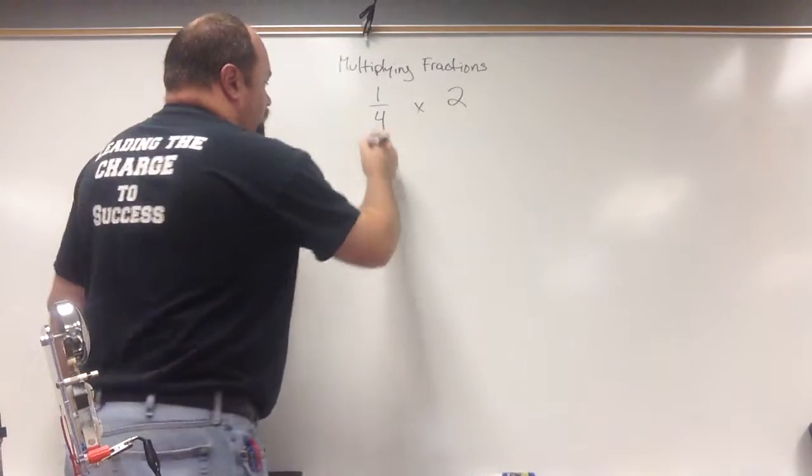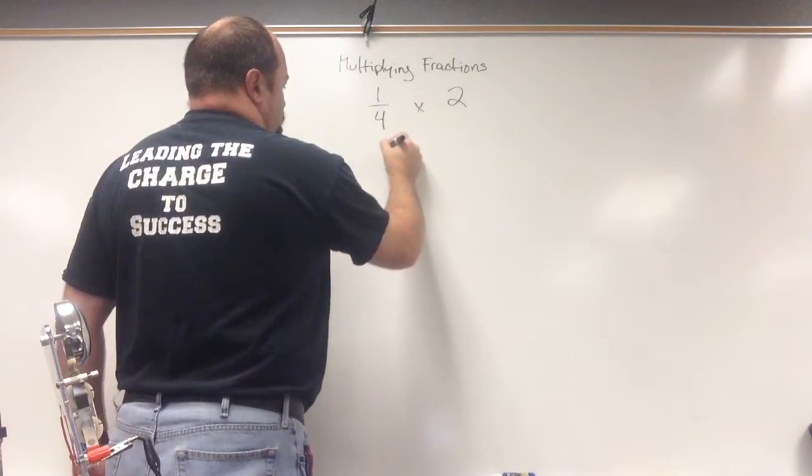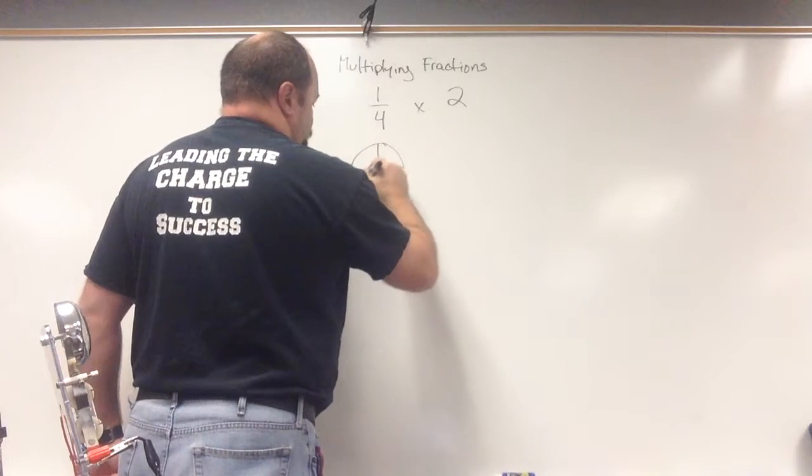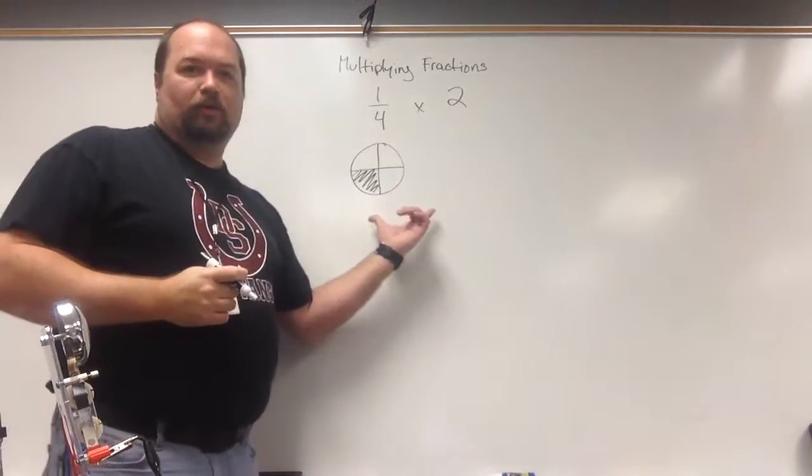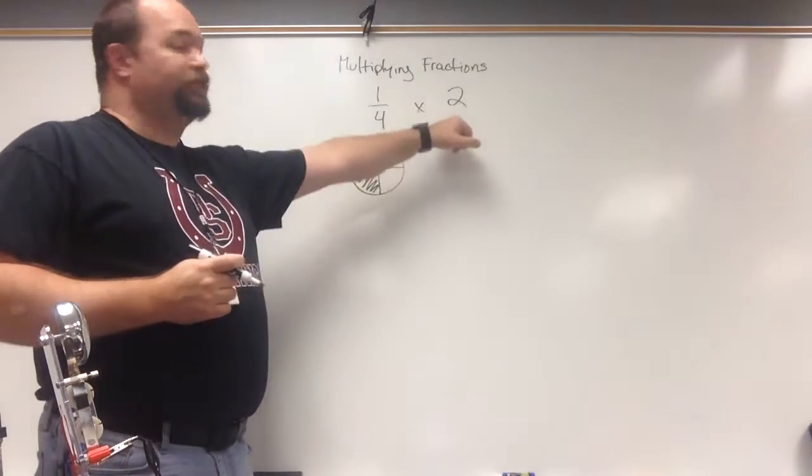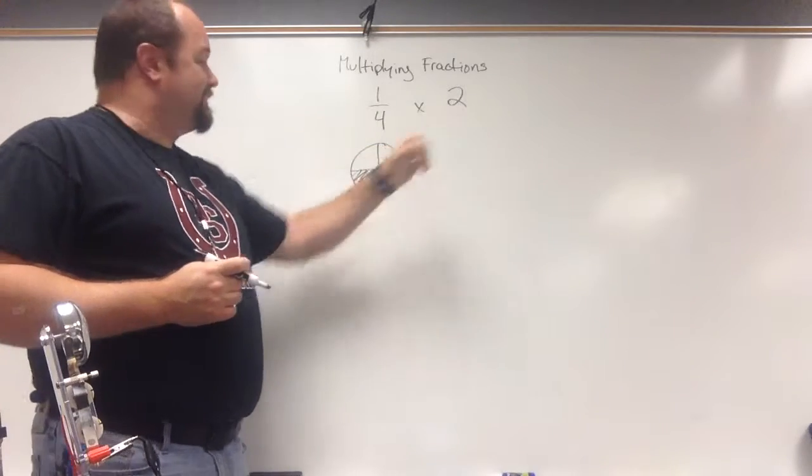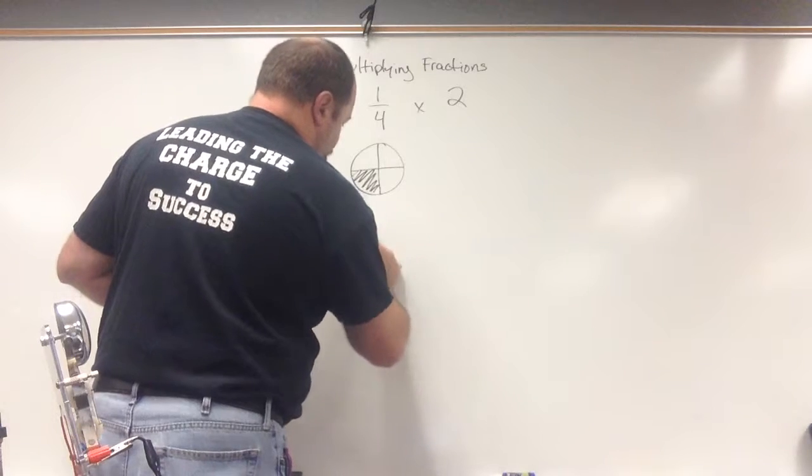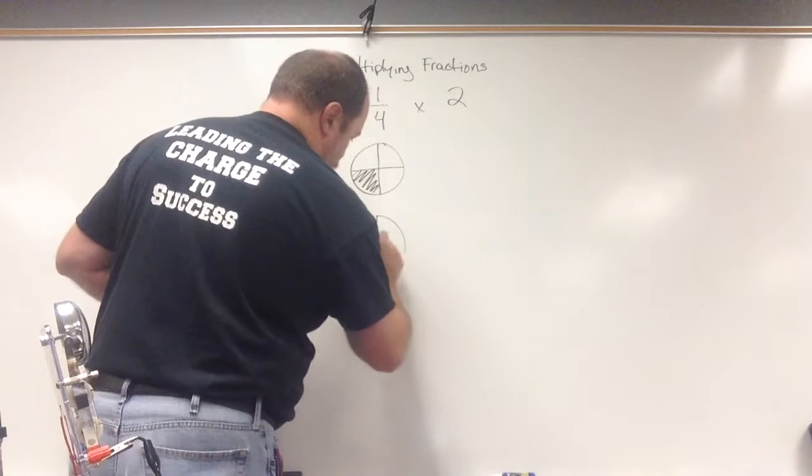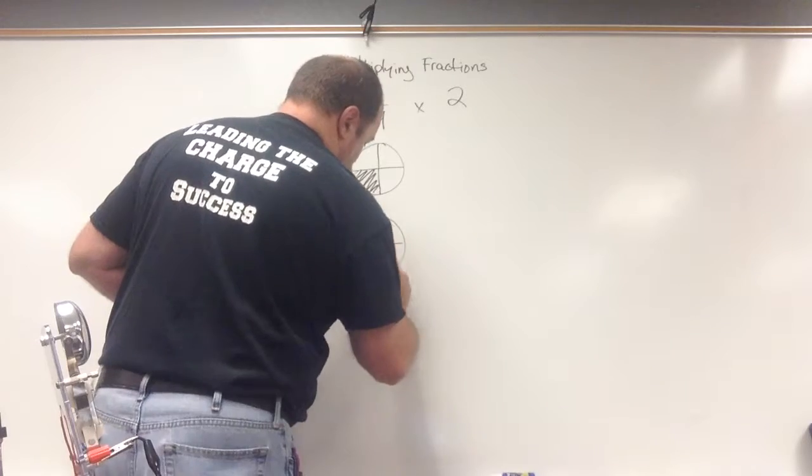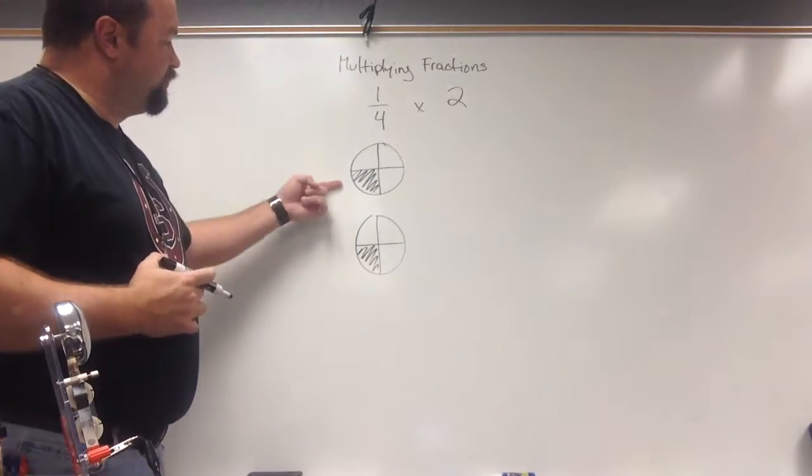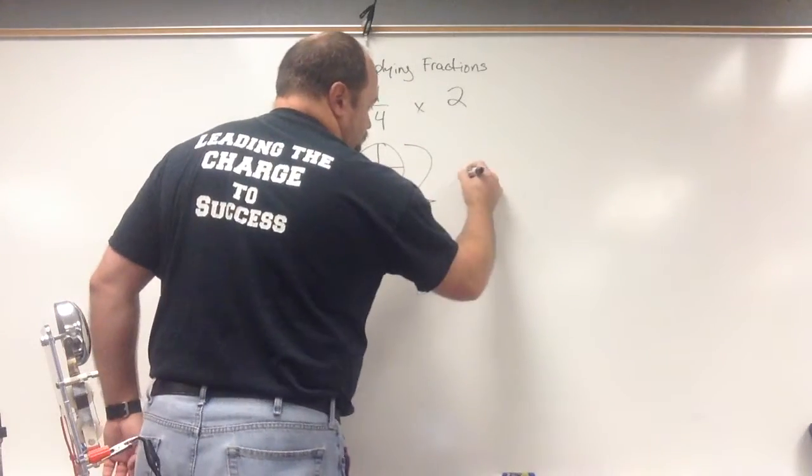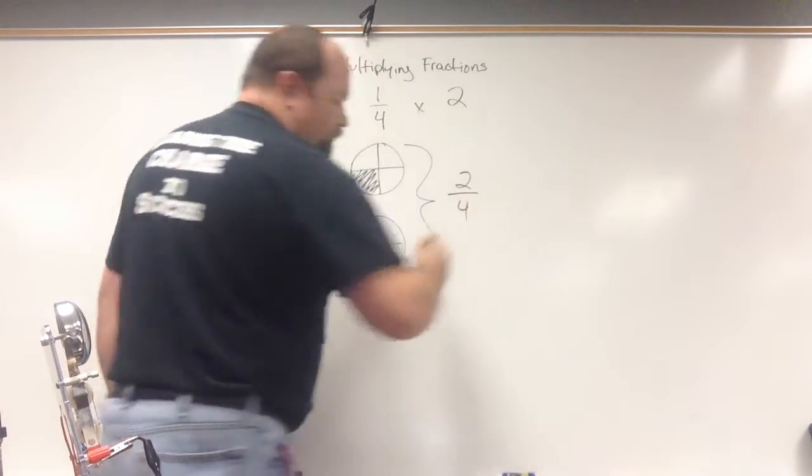Okay, so here is my one-fourth circle. And so if I have my one-fourth circle here, and I'm going to multiply it by two, which means I'm going to double this guy. So let's go ahead and double him. And so basically what I'm left with is one, two-fourths. So my answer here would be two-fourths.